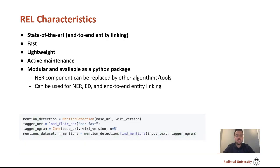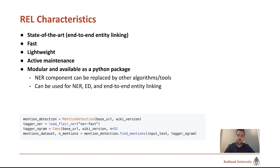REL is modular and available as a Python package. Its NER component can be replaced by other algorithms or tools. For example, we developed an n-gram detection module for high recall cases. As you can see in the find_mentions function, it can easily be replaced by passing a different class as the mention detection module. You can also develop your own mention detection module, for which we provide an example class on our GitHub page.